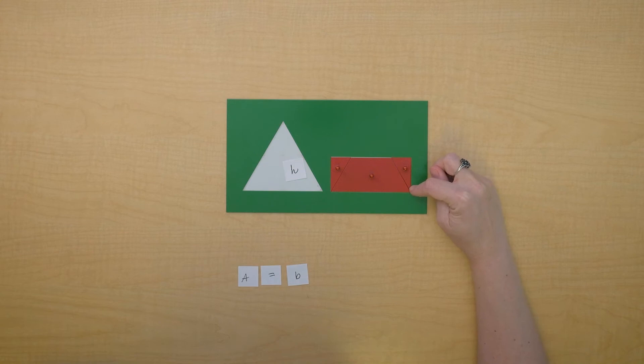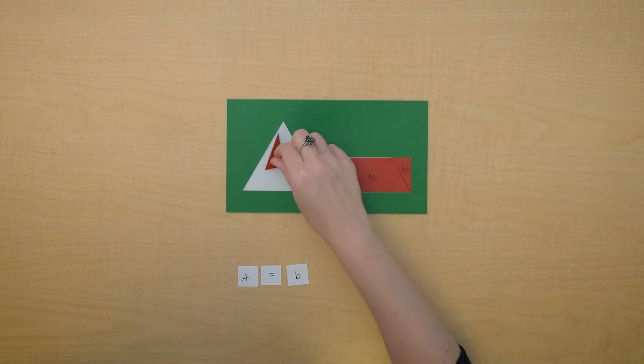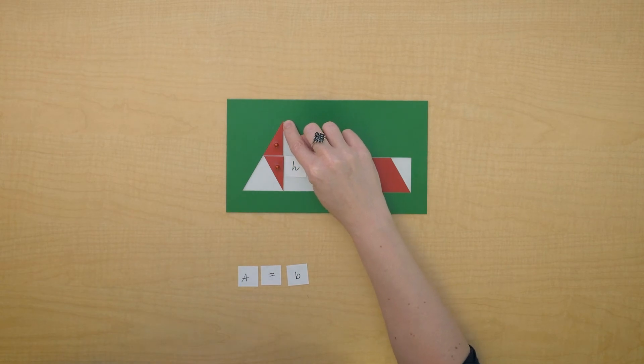But the height of this rectangle is not the height of the triangle. The height of the triangle extended from here all the way to the base. So the height of this rectangle is half the height of the triangle.